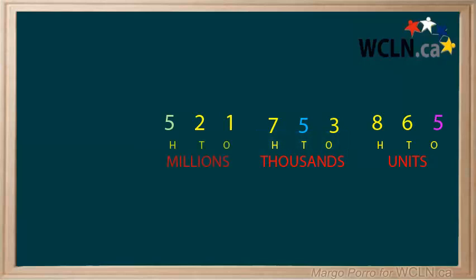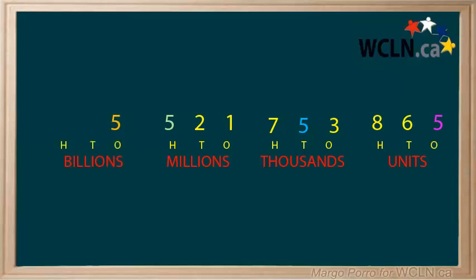Beyond the thousands is the millions period, and it has one millions, ten millions, and hundred millions. Even bigger than the millions are the billions, which again follow the same pattern.